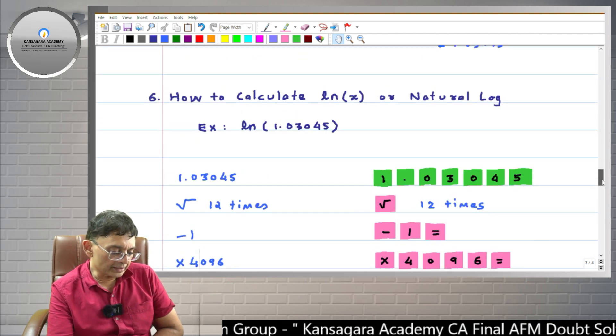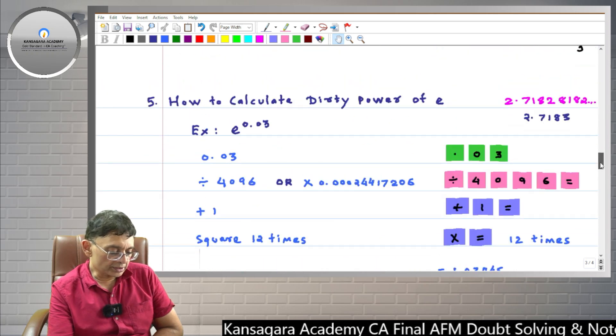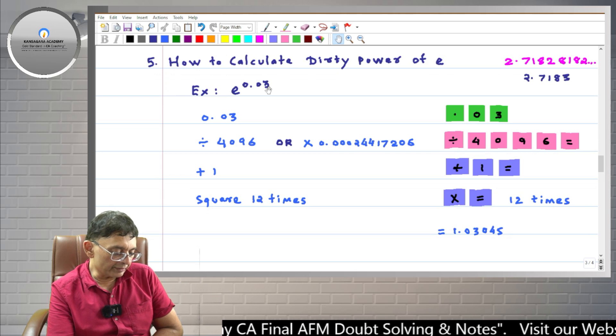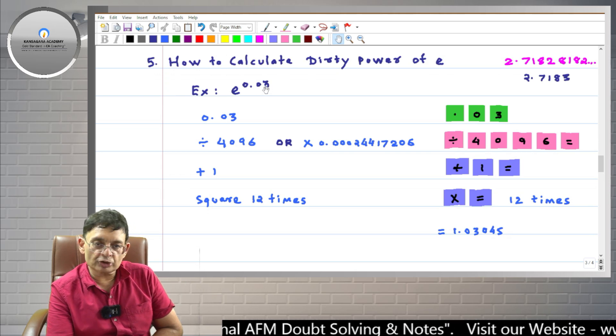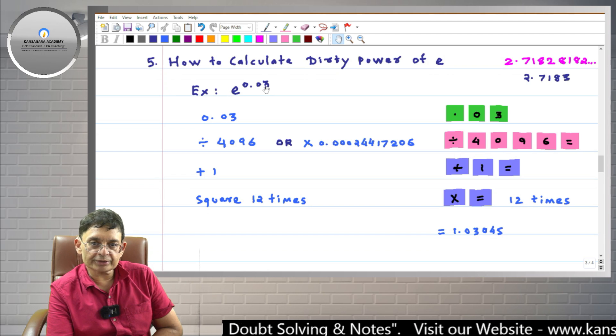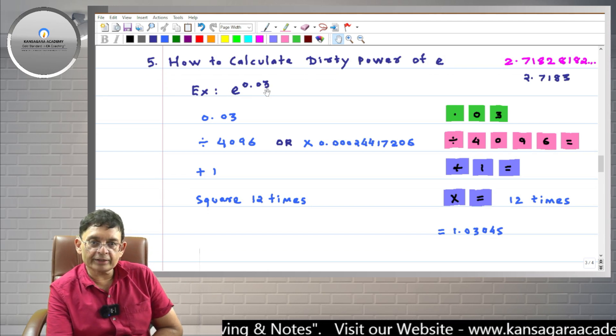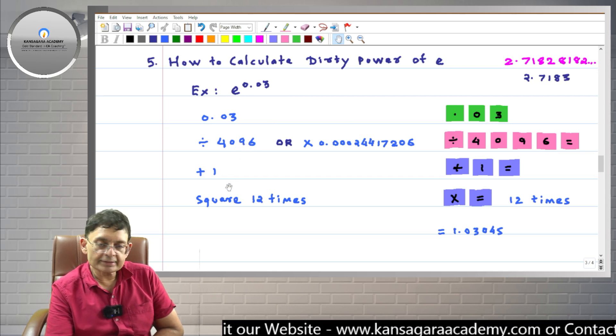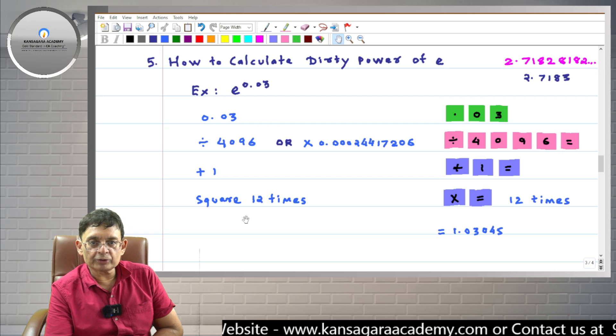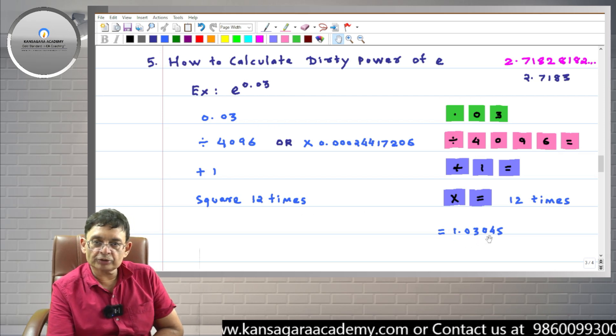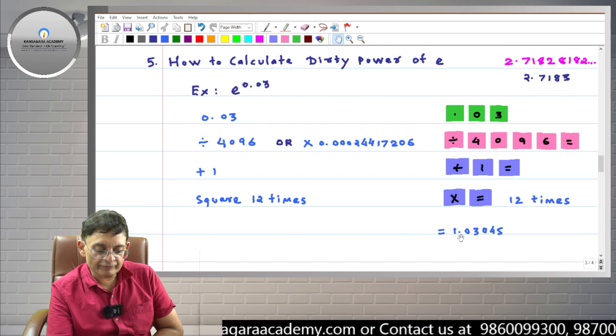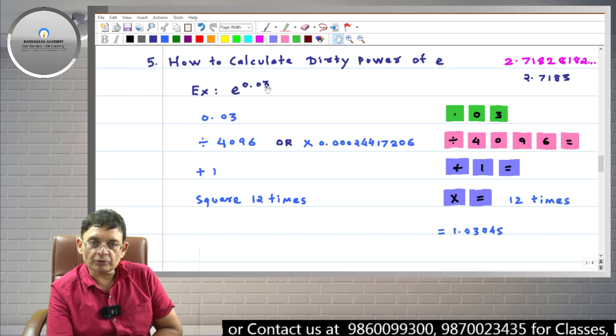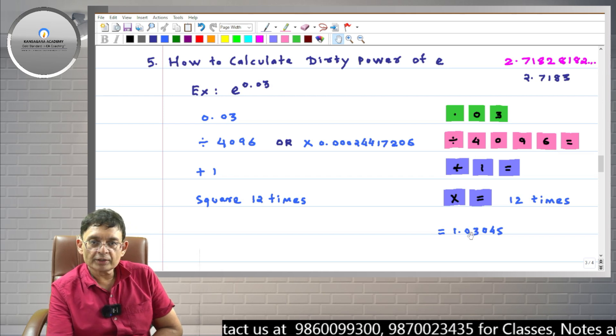So friends, here, let me show you the steps to calculate dirty power of E. So here, for example, we want to calculate E raised to 0.03. 0.03 is dirty power. So how we proceeded? First, we entered the power 0.03. Then we divided it by 4096. Then plus 1. And then we took square 12 times. So we got 1.03045. Now if we find the natural logarithm of 1.03045, then it will be 0.03. This is the inverse function of power of E.